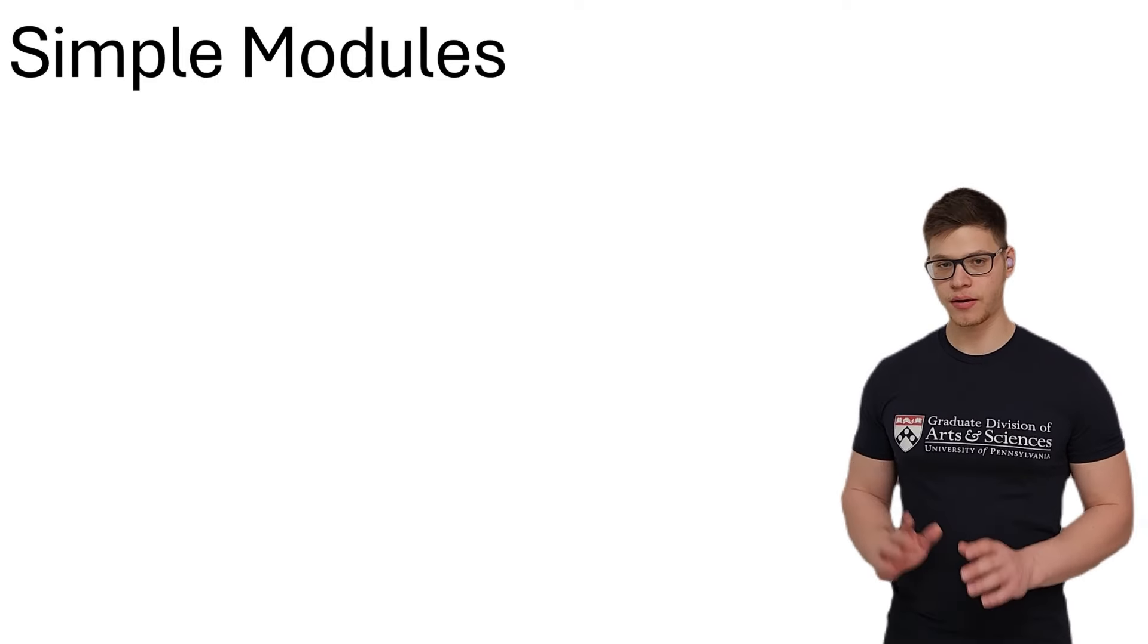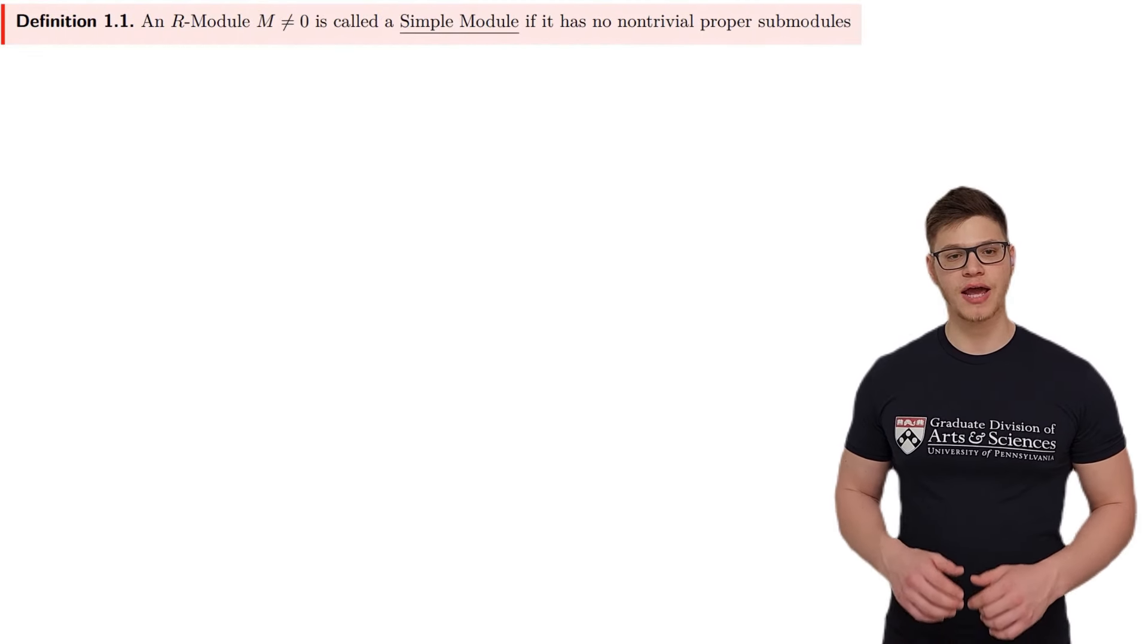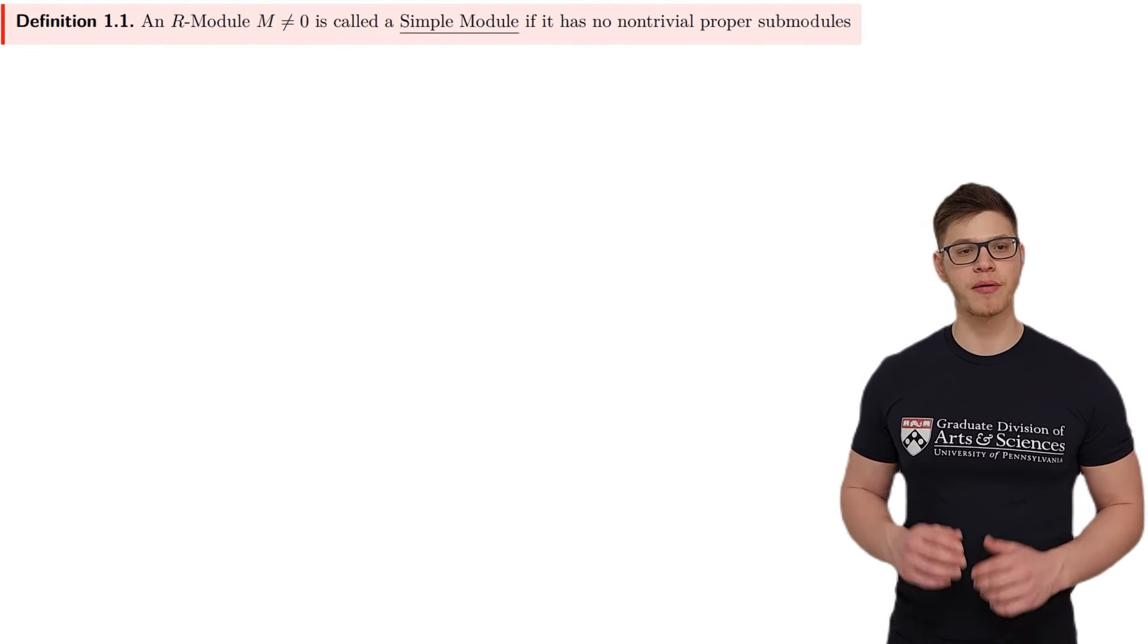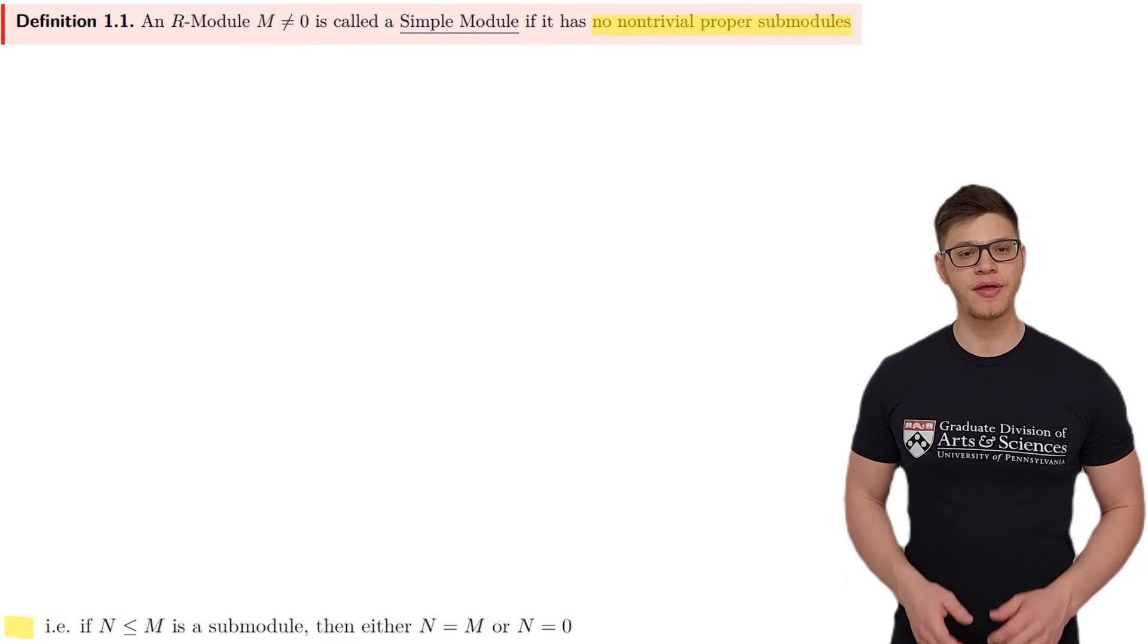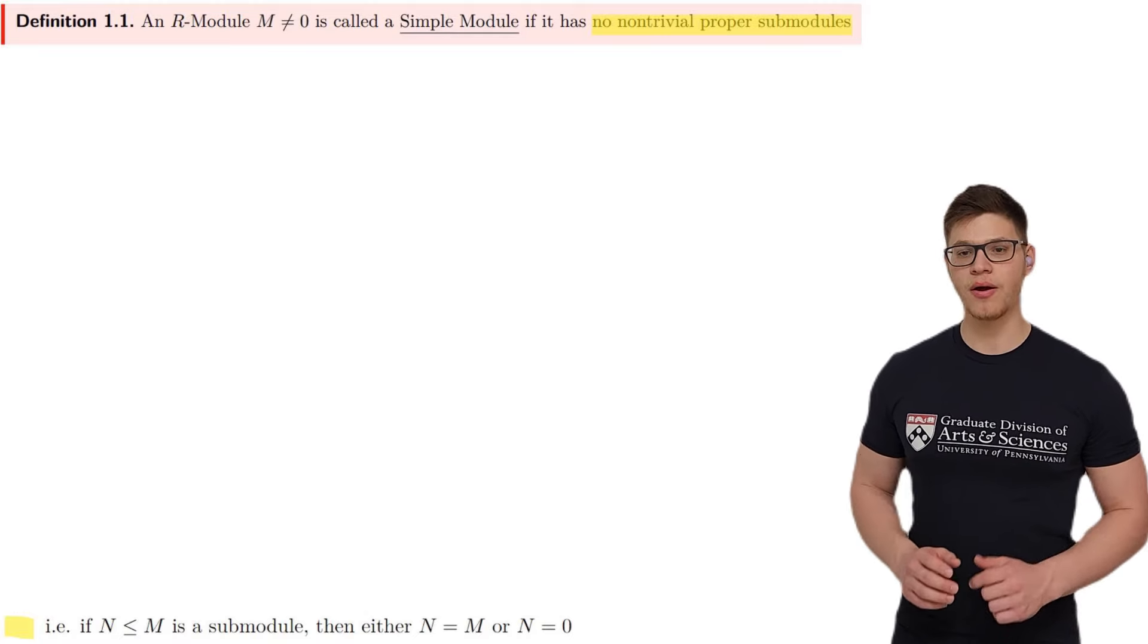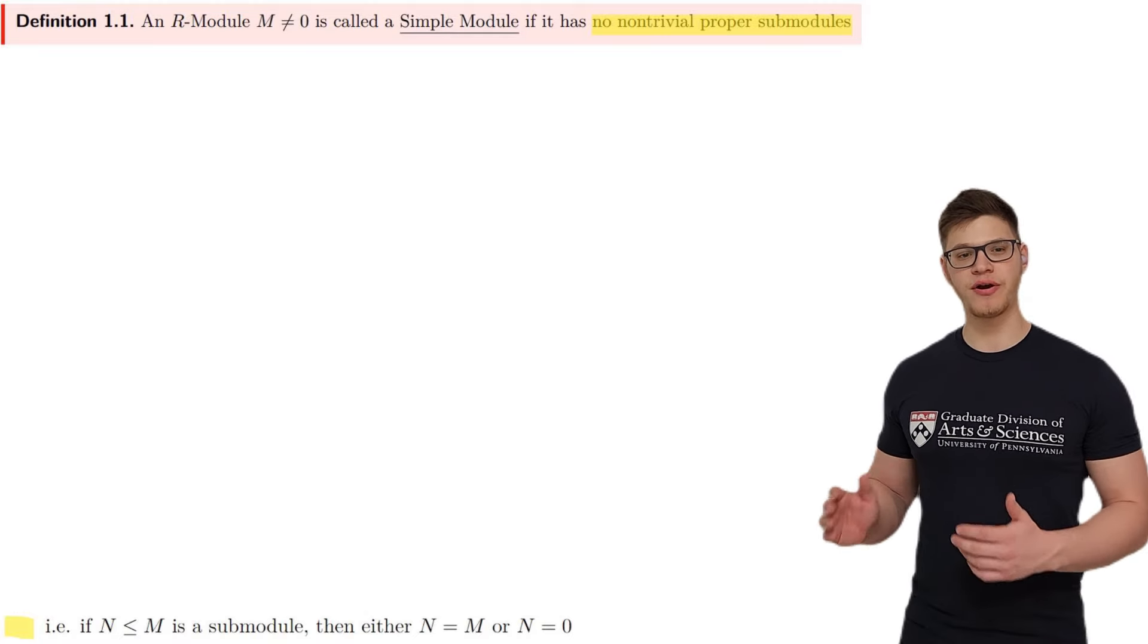So, an R-module, which, remember, we mean a left R-module, is called a simple module if it has no non-trivial proper submodules, i.e., if N is a submodule of M, then either N equals M or N equals the zero module.